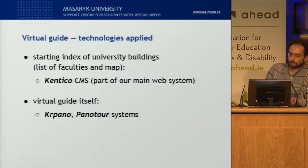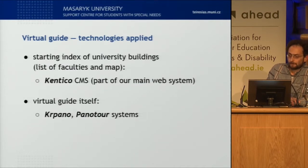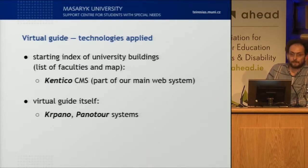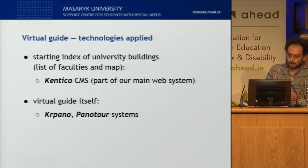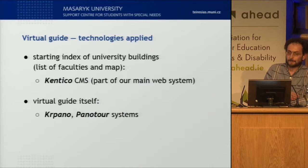Just briefly for those interested in the technology: the application interface starts with an index of buildings which are mapped and processed — a list of faculties and a map. This starting index is built on the content management system we use for our main web system, and the virtual guide application itself is based on the Carpano and Panotour systems.